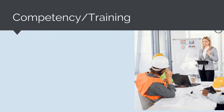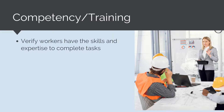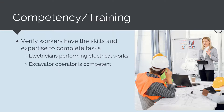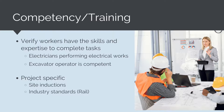Another important control method used on construction projects is competencies and training. Competencies and training help ensure workers are skilled and capable of completing the job they have been allocated. Examples include using only electricians for electrical works and ensuring an excavator operator's competencies are sufficient for the plant being used. Competencies and training can be project-specific — such as site inductions — industry-specific, such as rail safety training on rail projects, or job and task-specific, such as checking that a truck driver has their heavy vehicle licence. It is the role of the head contractor to ensure all these competencies are in place for all workers.